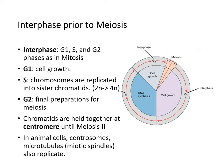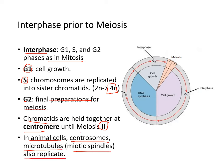The stages of meiosis are analogous to mitosis, with two rounds of division differentiated as meiosis I and II. Interphase consists of G1 (cell growth), S phase (DNA replication to become 4N), and G2 (final preparation). The chromatids are held together by the centromere until meiosis II. In animal cells, centrosomes and microtubules also replicate prior to meiosis I.